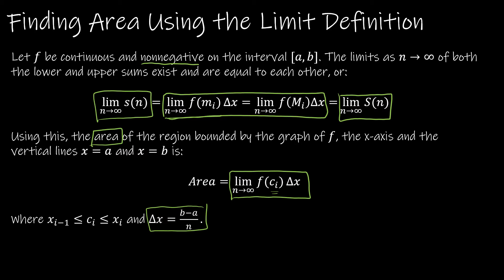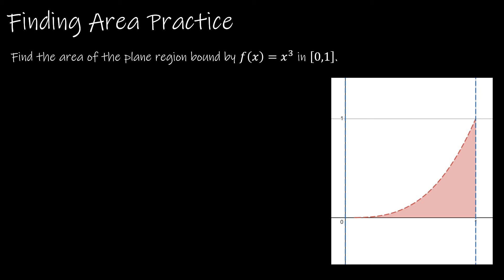Let's go through this question start to finish. I'm using the function x cubed, which is both non-negative and continuous on the interval from 0 to 1, so we can go forward. Step one is to find delta x, which we get from b minus a over n — in this case, 1 minus 0 over n, which is 1 over n.